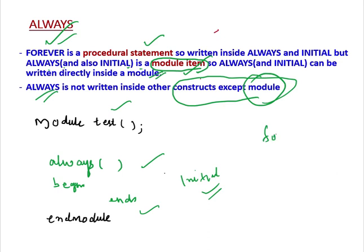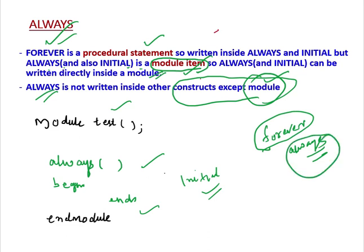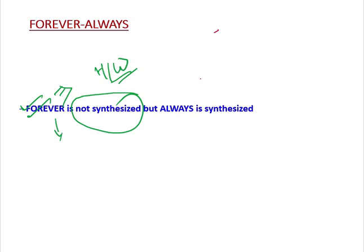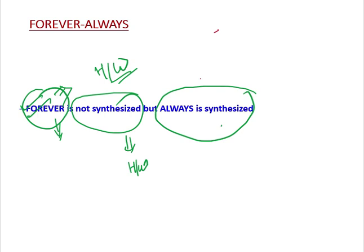For example, if you write Always inside a Forever construct, it is going to show you an Error. Inside any other construct except the Module, you cannot write an Always Block. Also, Forever is not Synthesized — this is a very important point. There is no Hardware definition for the Forever construct. But Always is synthesized in Verilog. Not synthesized simply means if you write Forever in your Verilog design, it is not going to infer any Hardware.